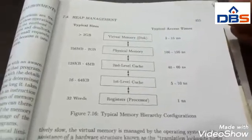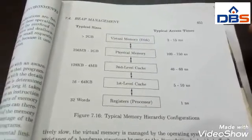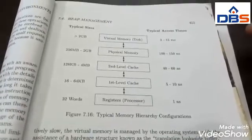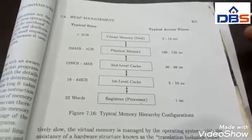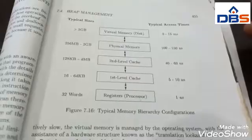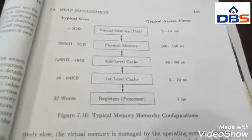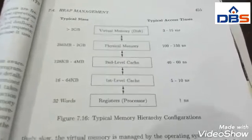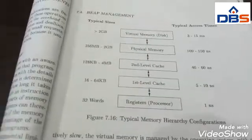In this hierarchy, data is transferred as blocks of continuous storage to amortize the cost of access. Larger blocks are used with the slower levels of the hierarchy. Between physical memory and cache, data is transferred in blocks known as cache lines, which are typically 32 to 256 bytes long. Between disk and main memory, data is transferred in blocks known as pages, typically between 4K and 64K bytes in size.